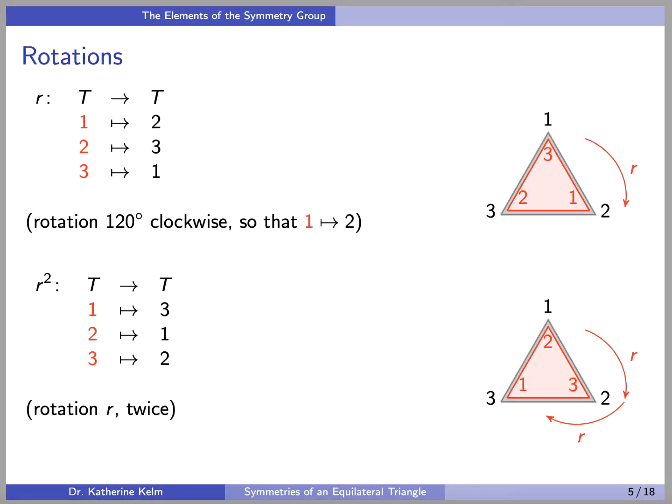Next, we have the rotations. R is going to be the function from T to T that takes 1 to 2, 2 to 3, and 3 back to 1, which corresponds to a clockwise rotation according to the labelings that I have, so that the vertex 1 gets sent to the 2 position. The vertex 2 gets sent to the 3 position, and the vertex 3 gets sent to the 1 position.